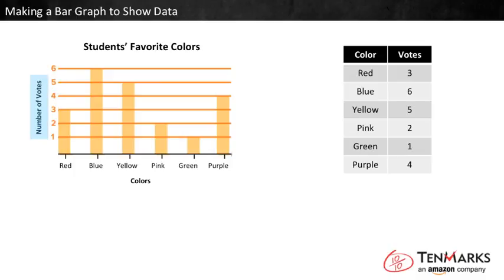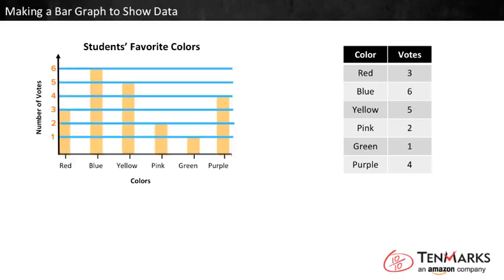Since the numbers could keep counting up much higher, we should add an arrow going up the side like a number line. A bar above each category shows how many votes the category has, and the bar reaches up to the right number of votes. To make it easier to tell how tall each bar is, lines reach across the graph from each number.